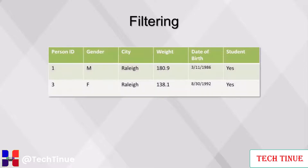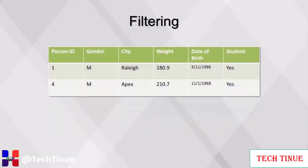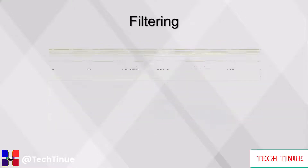Here's our table with the erroneous observation removed. This table is filtered to show only records of people who live in Raleigh. Here's our original dataset again. This table is filtered to show only records of people who weigh more than 180 pounds. Filters of different variables can be applied together — combining the above examples, we can filter the original table for people who live in Raleigh and weigh more than 180, resulting in only one observation.